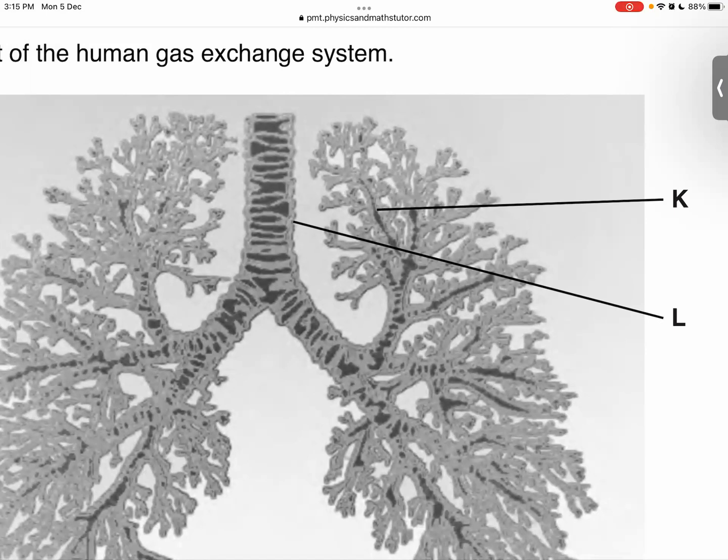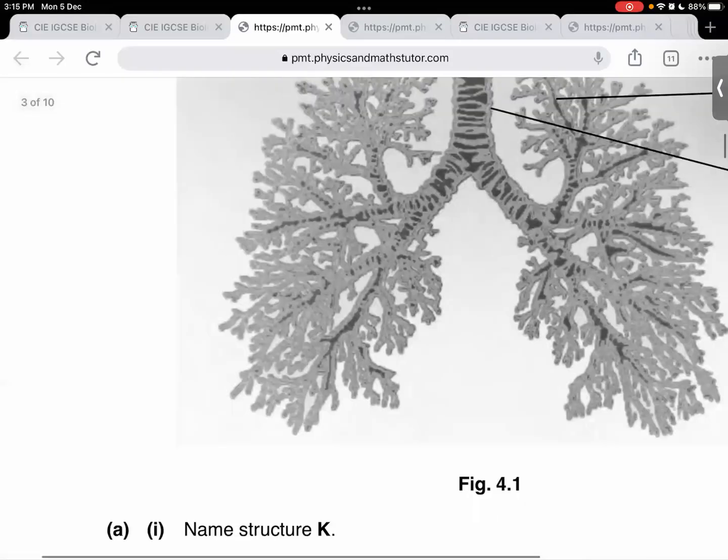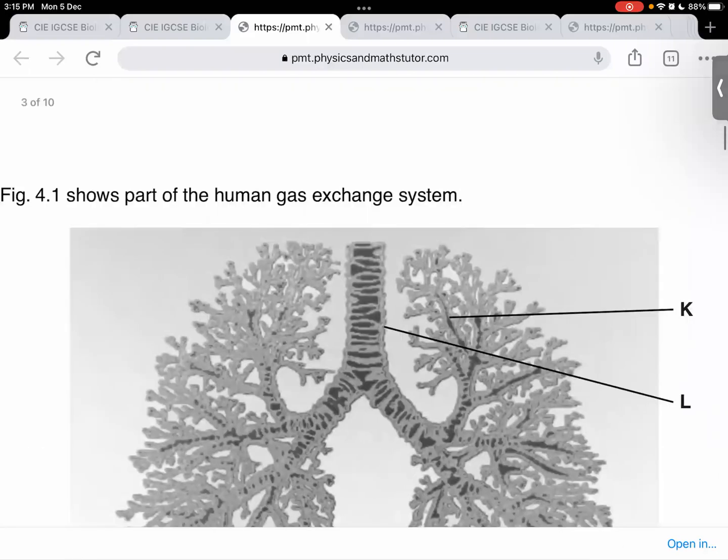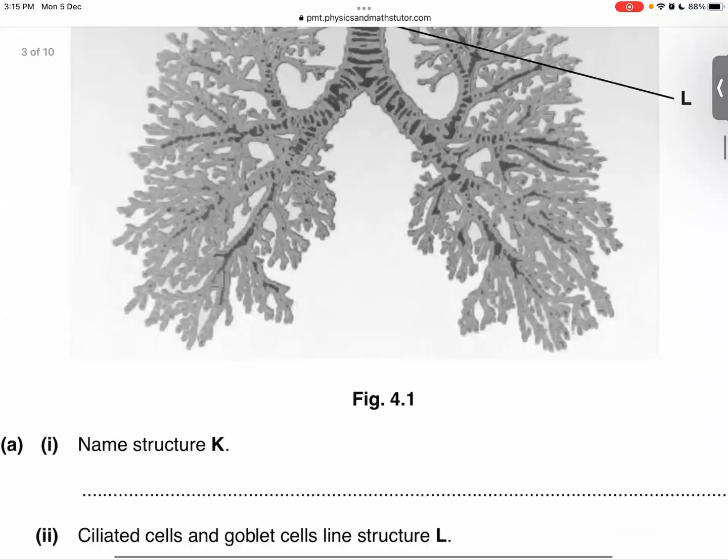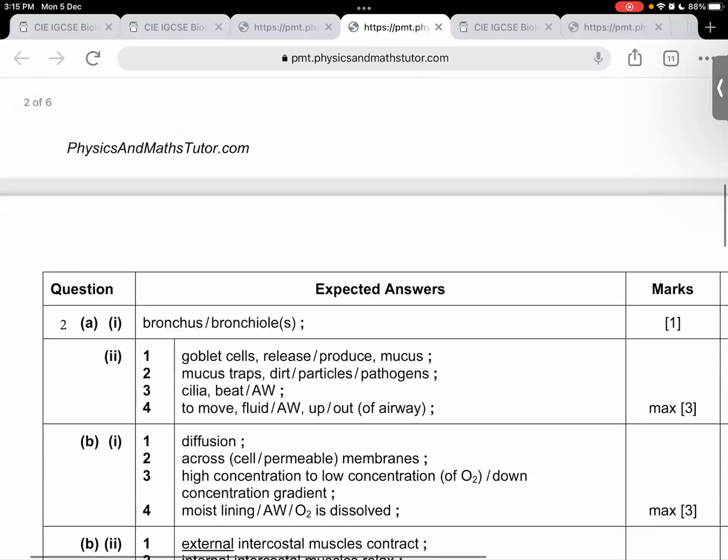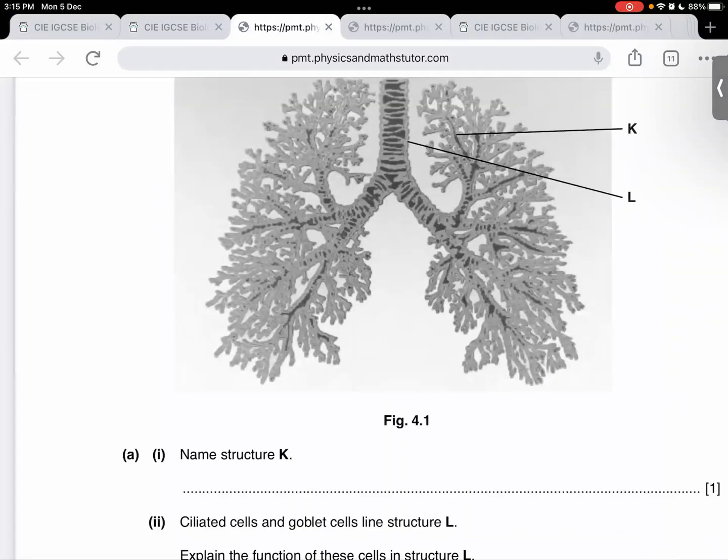Bronchiole lag raha hai. Alveoli, you know. Bronchiole is the finest branch of the bronchus. Alveoli are always grape-like structures. It's not pointing to the alveoli. Alveoli are those grape-like structures. Name structure K. Let's see what the mark scheme says K is. K is bronchiole. Bilkul sahi.